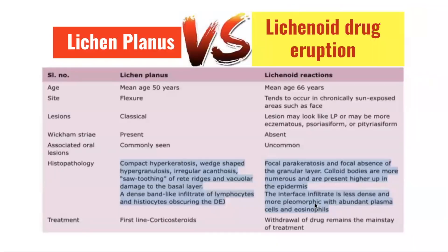Comparing lichenoid drug eruption with lichen planus: the mean age for lichen planus is 50 years, which is younger than the mean age for lichenoid reactions at 66 years. Lichen planus tends to affect flexural surfaces, classically the flexor wrists, whereas lichenoid reactions tend to occur in chronically sun-exposed areas such as the face. Lesions in lichen planus exhibit the classic 6Ps, whereas lichenoid drug eruption lesions can resemble classic lichen planus or may have surface changes resembling eczema, psoriasis, or pityriasis. Wickham striae is present in lichen planus but usually absent in lichenoid reactions.